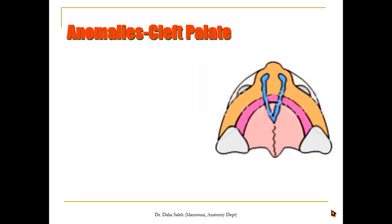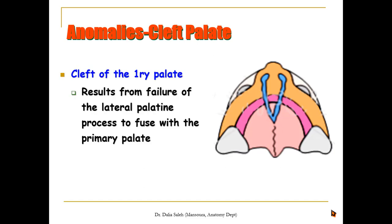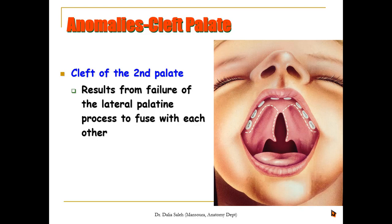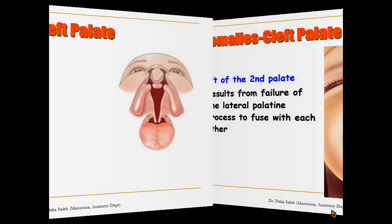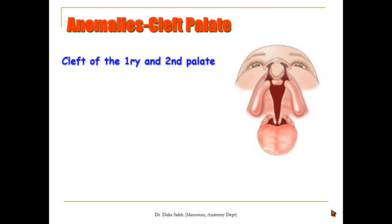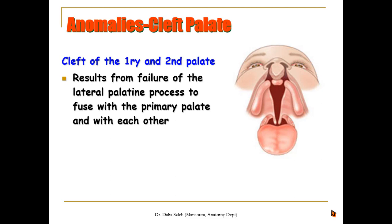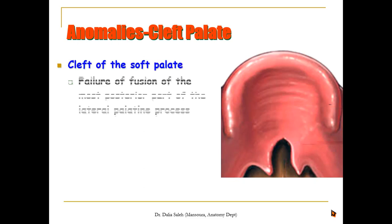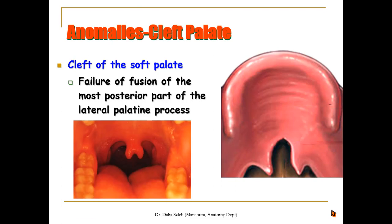Anomalies of the palate include cleft palate, which can take several forms: cleft of the primary palate results from failure of the lateral palatine process to fuse with the primary palate; cleft of the secondary palate results from failure of the lateral palatine processes to fuse with each other; cleft of both primary and secondary palate results from failure of the lateral palatine processes to fuse with each other and with the primary palate; or there can be a cleft of just the soft palate and uvula due to failure of fusion of the posterior ends of the lateral palatine processes.